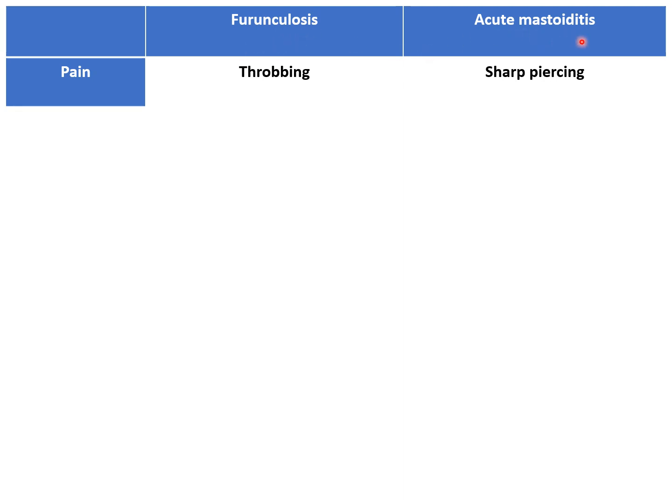While acute mastoiditis is the inflammation and infection of the mastoid air cell system in which there may be collection of pus in the mastoid air cells.